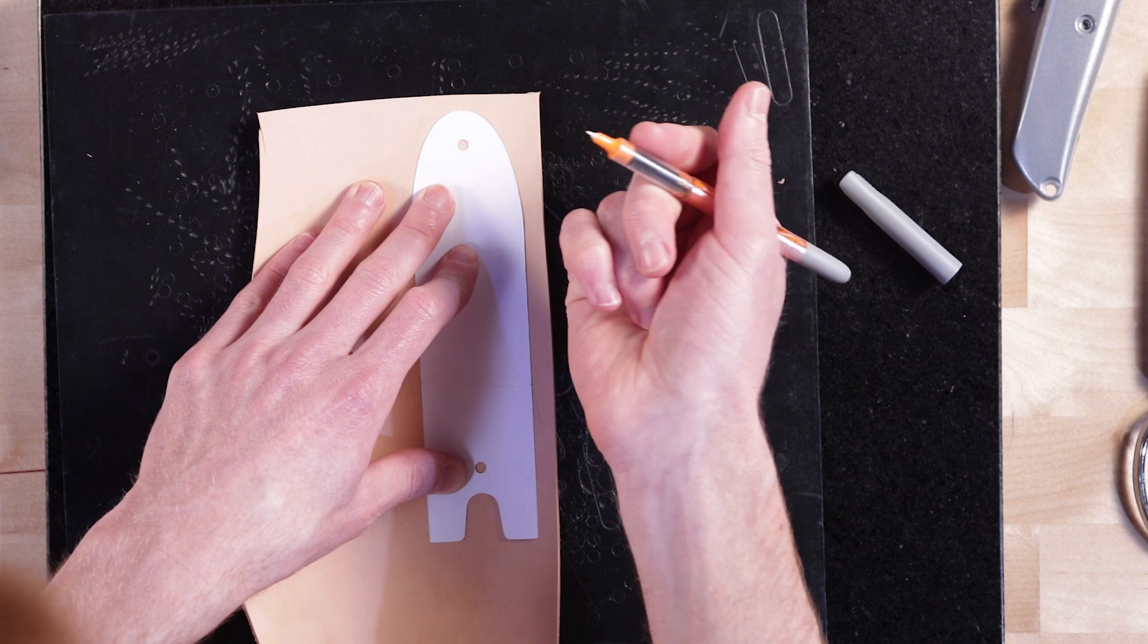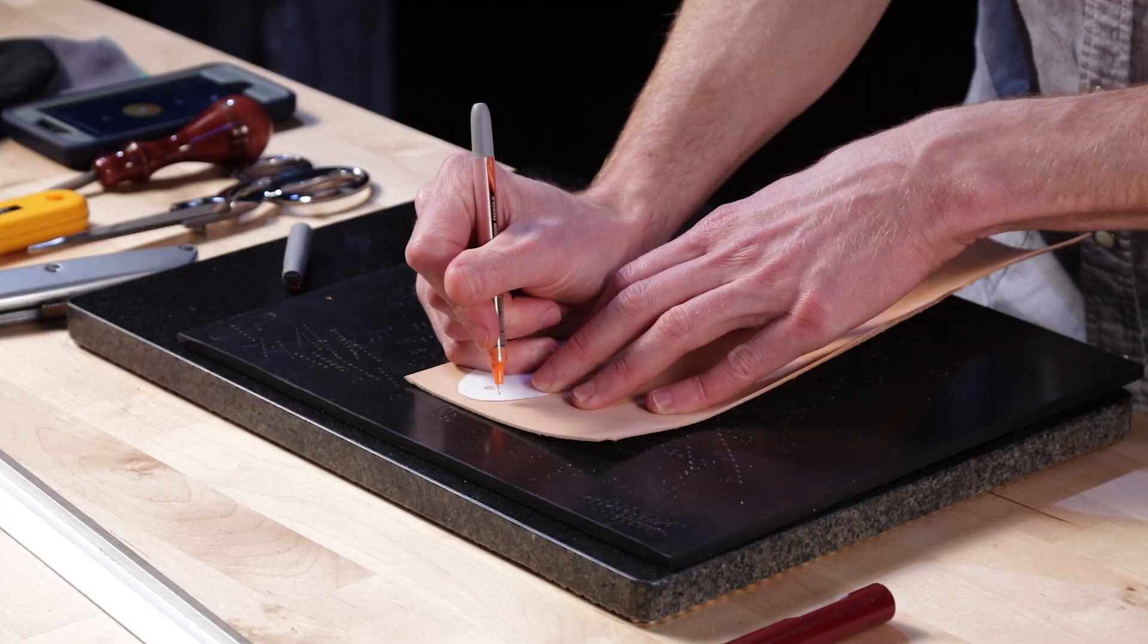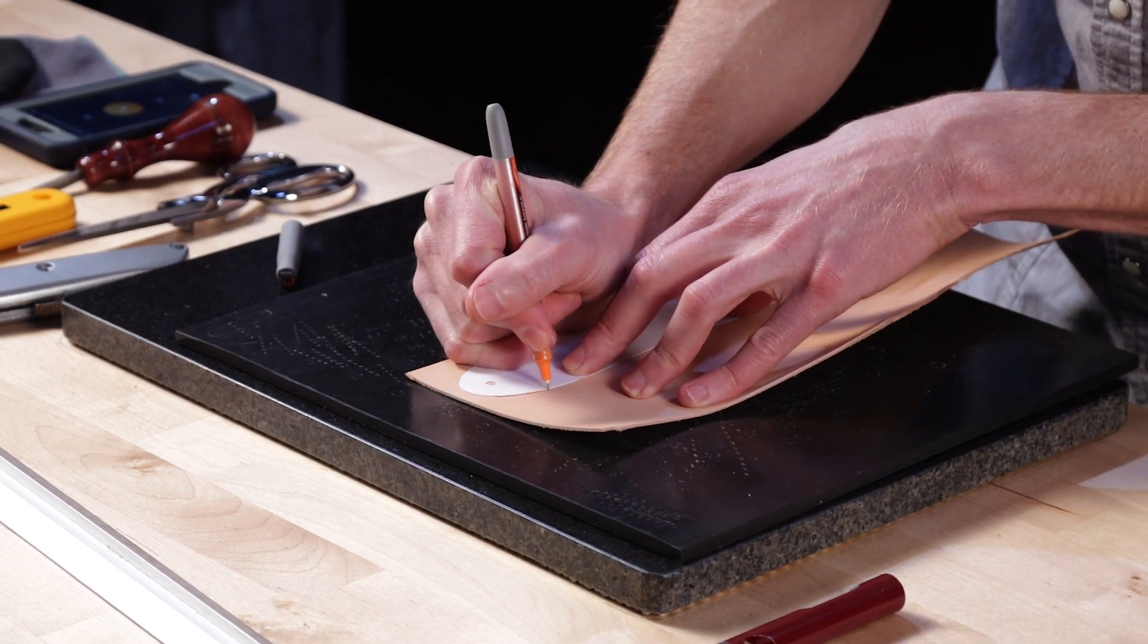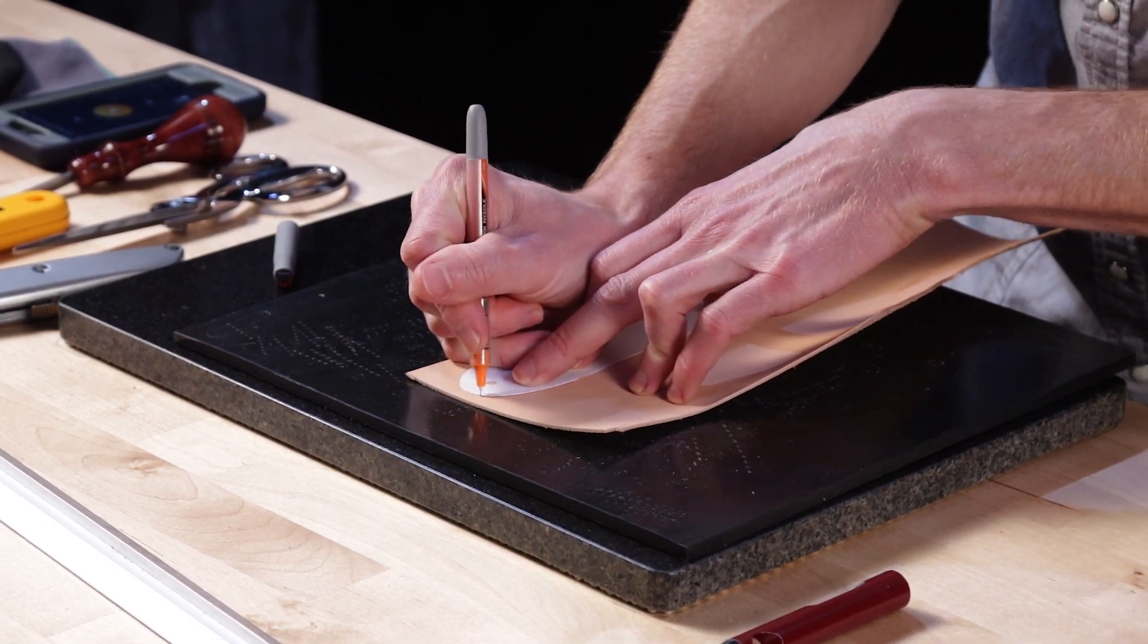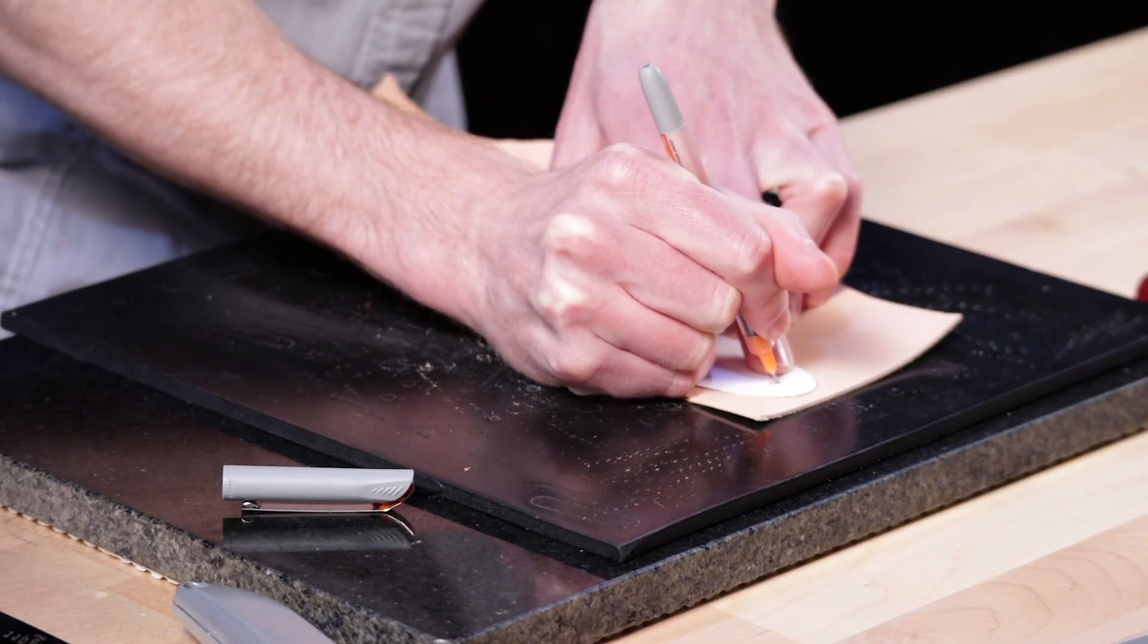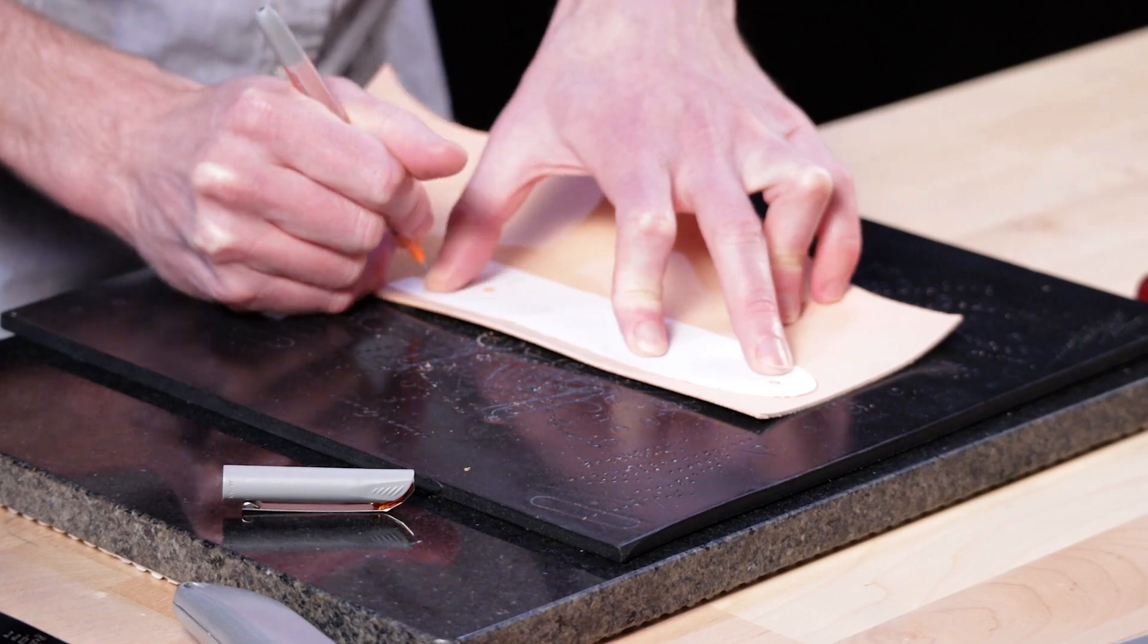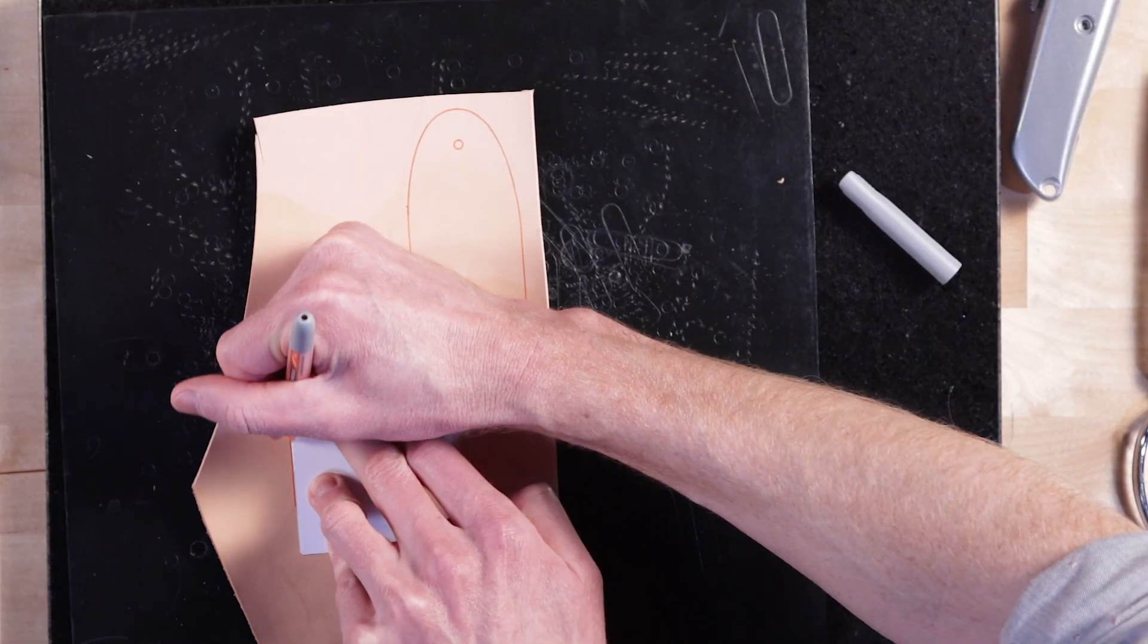Let's get started first by tracing and cutting out the pattern. When tracing out patterns, I like to use an orange or red speedball pen. It makes tracing the edge a little more precise and quicker. Don't worry too much about the line that's created. You'll end up beveling that off or sanding it off a little bit later. I'm just tracing on the liner piece here.